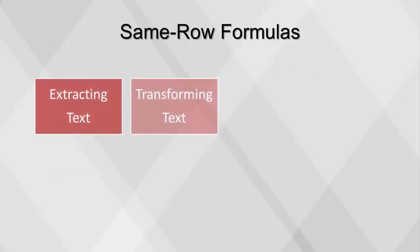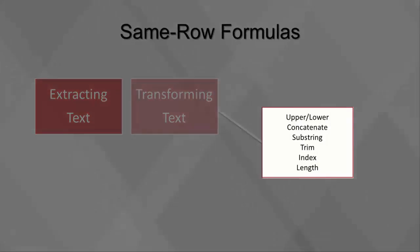Formulas can also be used to extract and transform strings from a text field. There are a few common functions for transforming text, and they are typically named differently depending on the software package being used. The most common of these are upper-lower, used to change the field to all upper or lowercase characters; concatenate, which combines two or more strings into one field; substring, used to extract a portion of a string; trim, which can be used to remove certain characters, usually spaces, from a field; index, used to find the location of a certain string within a field; and length, which finds how many characters are in a field.